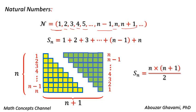Let us denote Sn as the sum of the first n natural numbers. Sn equals 1 plus 2 plus 3, up to plus n-1 plus n. Representing each natural number as a block of unit squares, we show that Sn equals n times n plus 1 divided by 2.